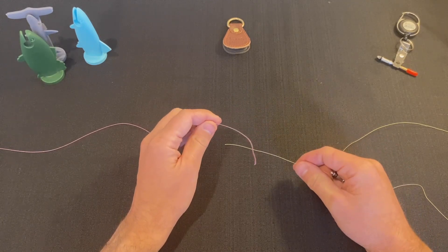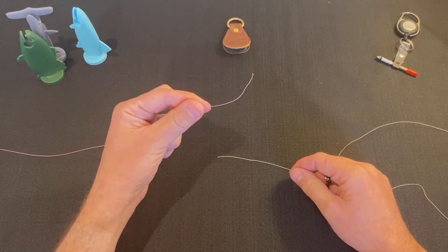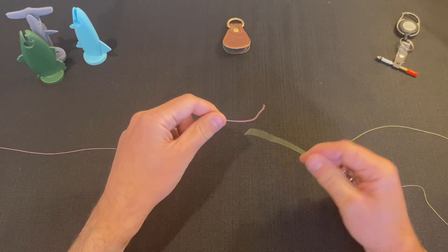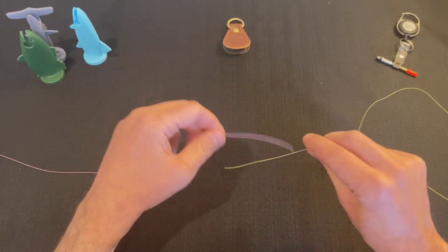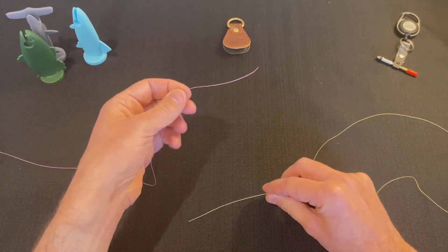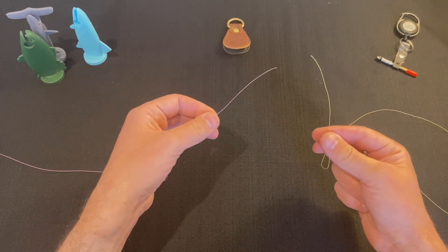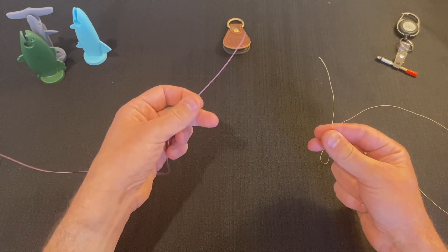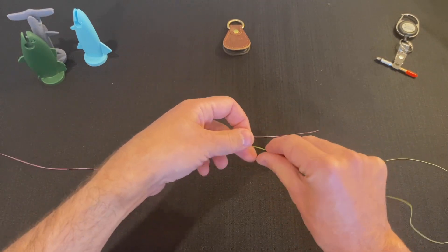For demonstration purposes, I'm going to use this 65 pound braided line and this 40 pound braided line. The pink line is my leader and the yellow line is my tippet. I'm going to overlap them by about 6 to 8 inches.